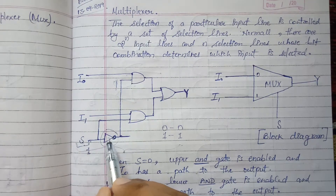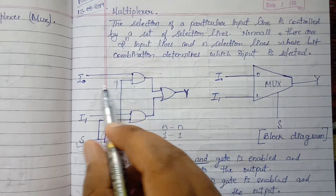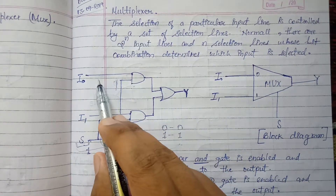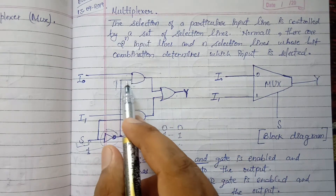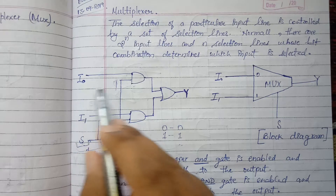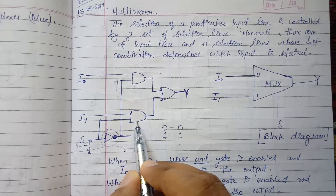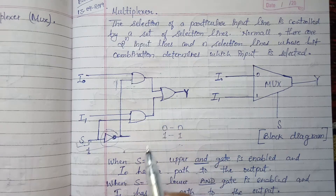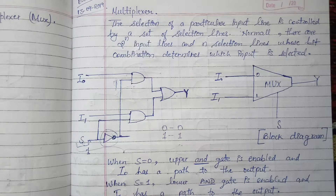If S is 0, the complement becomes 1, so this AND gate passes I0 — the output is I0. If S is equal to 1, this AND gate receives 0 for the complement, so I0 is blocked. For the I1 AND gate, S passes directly as 1, so I1 will be the output. In this way, the bit combination of the select input decides which particular input is the output.